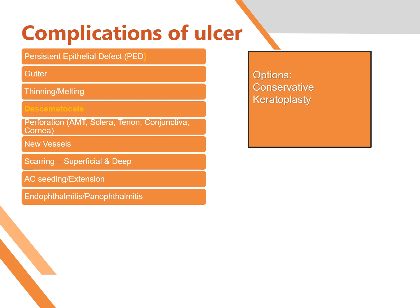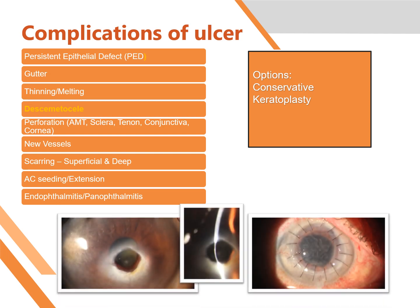Then there is the desmetocele. What is a desmetocele? The cornea is so thin that only Descemet's membrane remains and the whole stroma has melted. This is very thin and likely to get perforated. If it's a very small one, you can treat it conservatively; otherwise, you have to do keratoplasty as shown here.